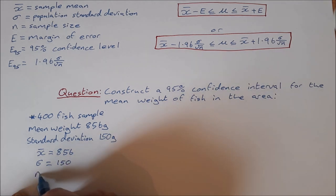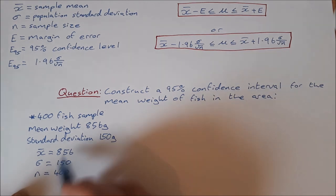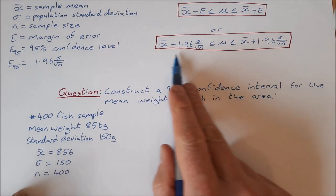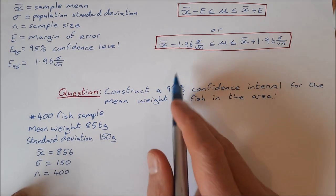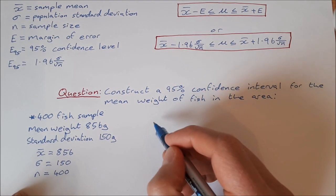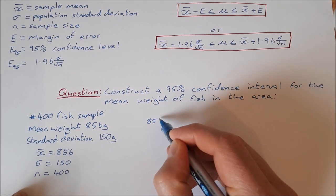And then we have n, which is our sample, that's 400. So that's all we need in order to make our confidence interval. Filling in from here, x̄ is 856.